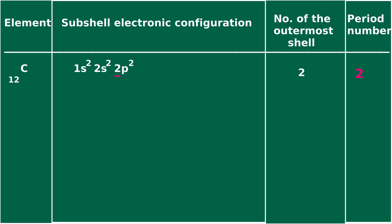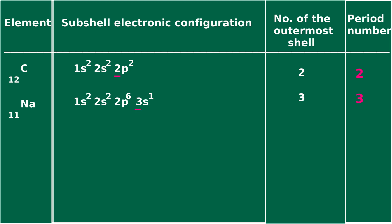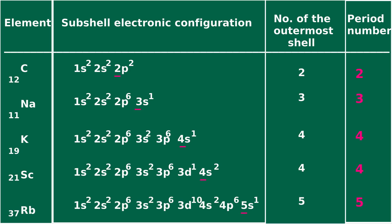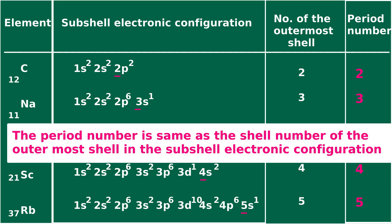The period and group of an element can be found from its sub-shell electronic configuration. The period number is the same as the shell number of the outermost shell. The number of main energy levels determines the period number of an element.